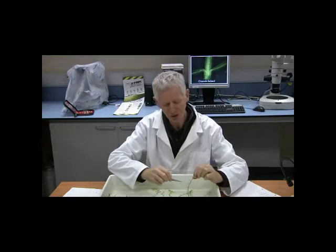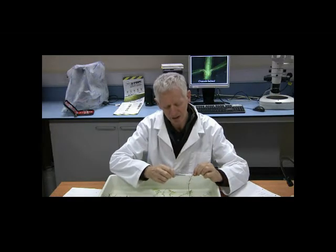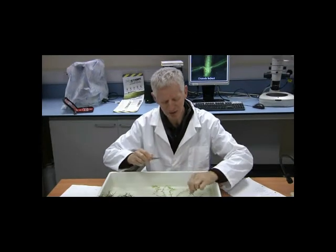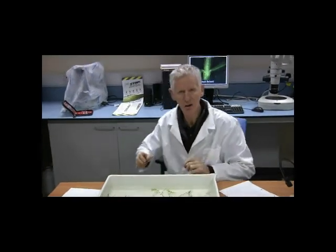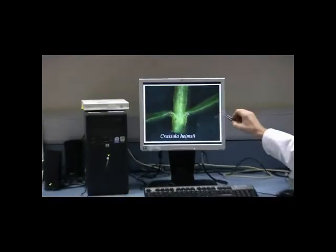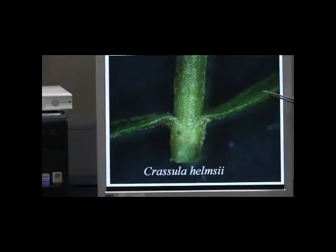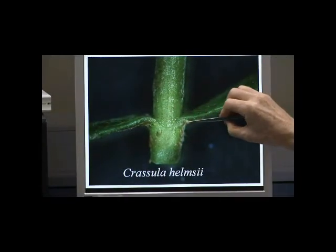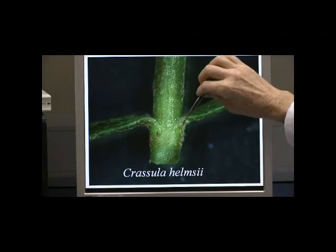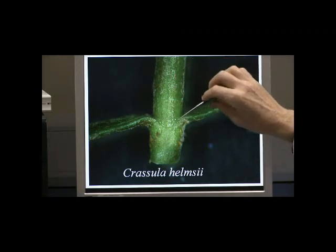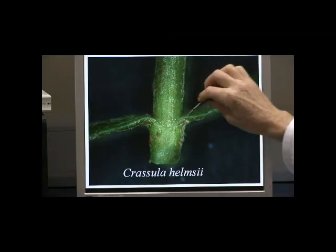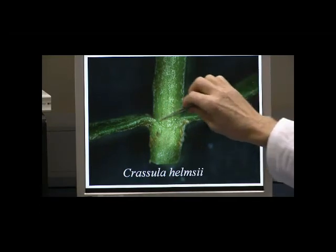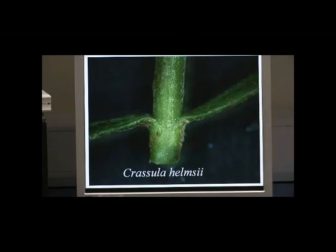Another distinguishing feature relating to Crassula relates to the manner by which the leaves join the stem. For this, I'm going to have to show you on the computer behind me. Here we have it magnified and you'll notice that the two opposite leaves merge or coalesce to form quite a distinctive collar. This is normally visible to the naked eye, but if you have a hand lens it certainly is very clear. So this is quite distinctive in relation to Crassula.